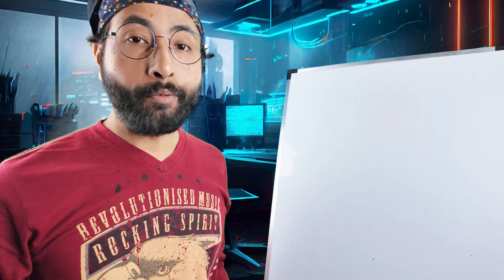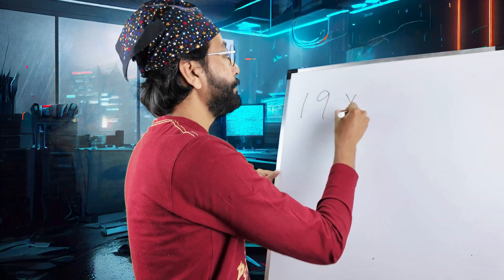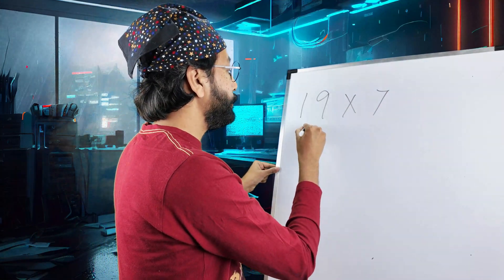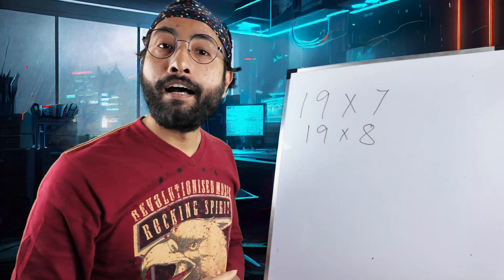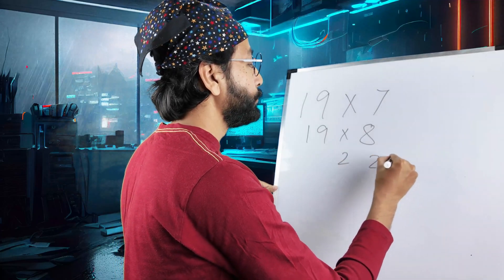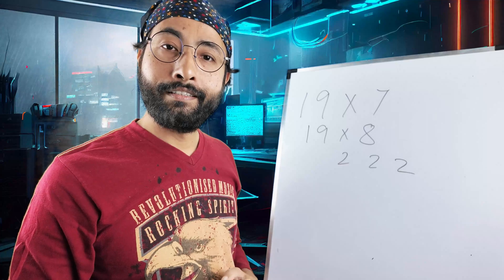Let's make it a little more complicated. Something like 19 sevens are. Now, we know to make it easier, we'll find out 19 eights are. Now, 8 means 2, 2 and 2, 2 into 2, right? That means 3 times double, right?